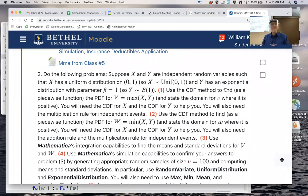So X and Y are independent random variables where X was uniform on the interval from 0 to 1 and Y was exponential with parameter beta equals 1. And beta would be the mean, so the mean of Y is 1.